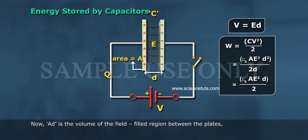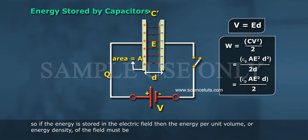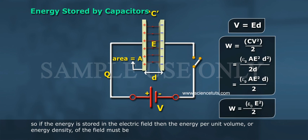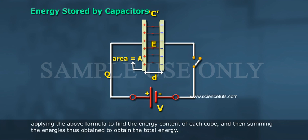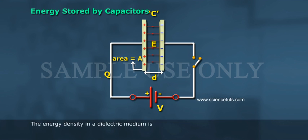Now, A·d is the volume of the field-filled region between the plates. So if the energy is stored in the electric field, then the energy per unit volume, or energy density of the field, must be W = ε₀·E²/2. Thus we can calculate the electric field energy by dividing space into little cubes, applying the above formula to find the energy content of each cube, and then summing the energies to obtain the total energy.